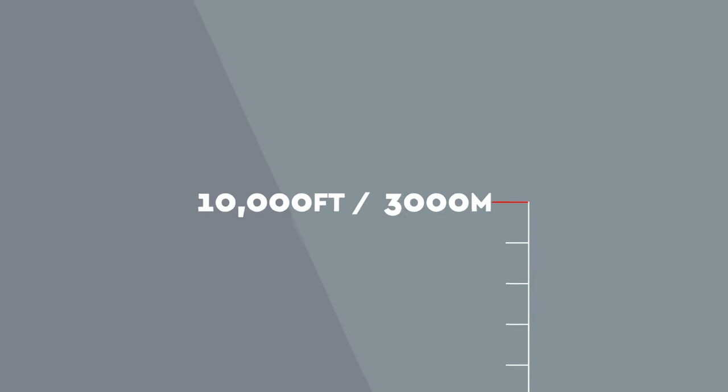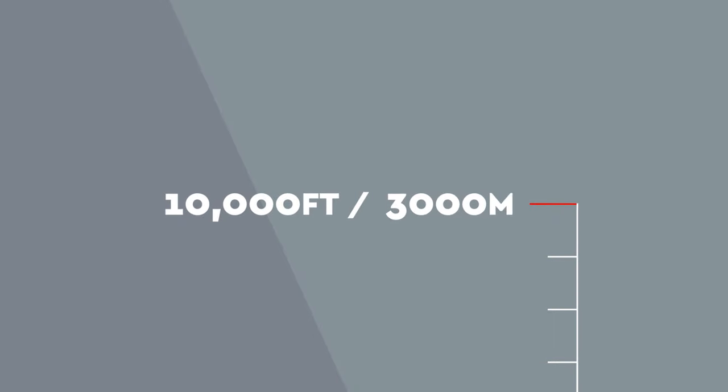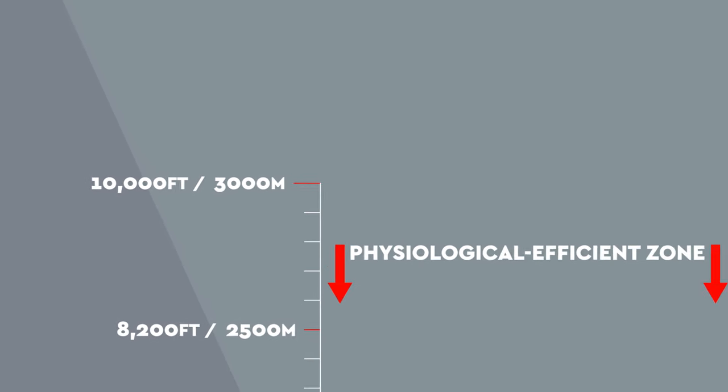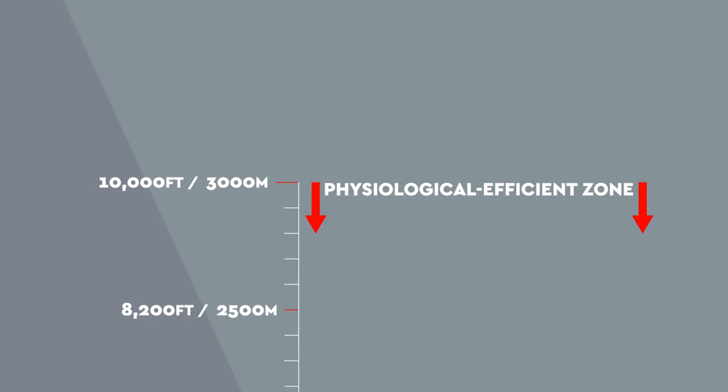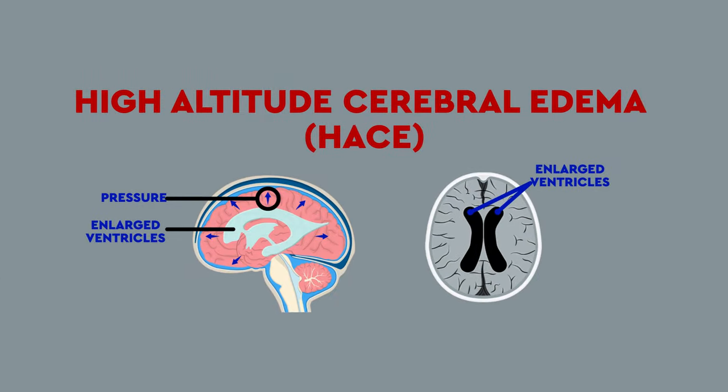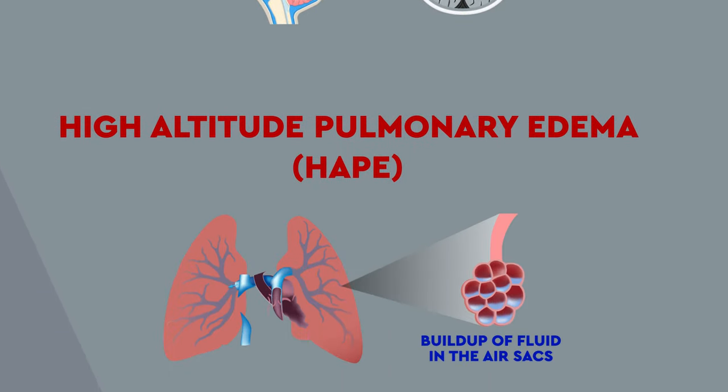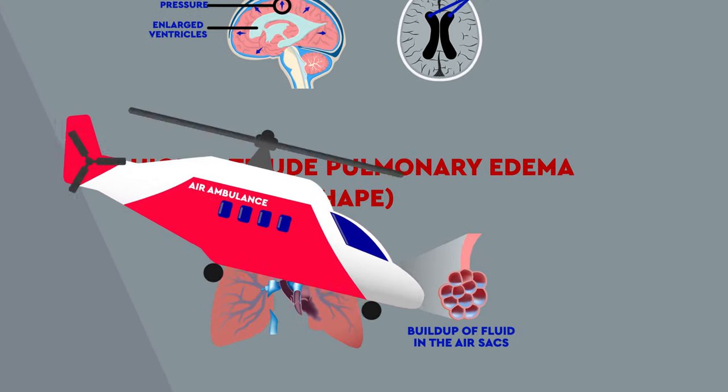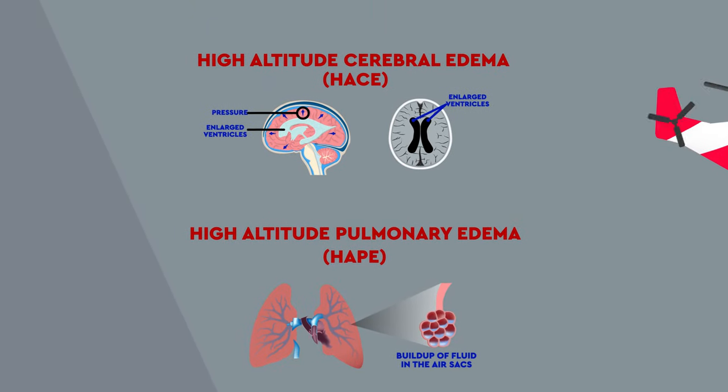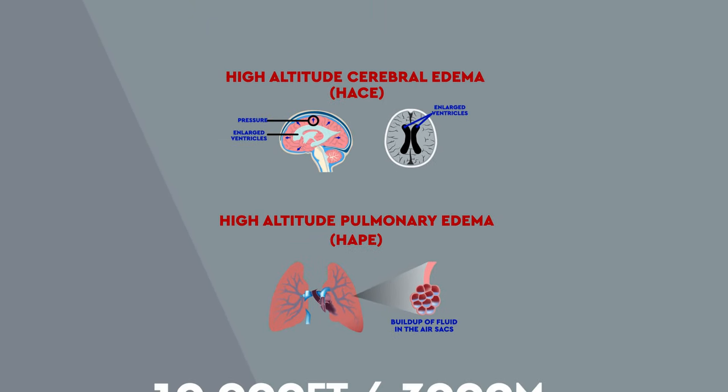However, if you continue up above 10,000 feet, around 3,000 meters, leaving what's termed the physiological-efficient zone, then you run the risk of developing high-altitude cerebral and or pulmonary edema, where fluid accumulates around your brain and in your lungs. Without treatment fast, this can be fatal.